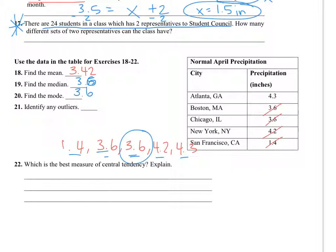And any outliers, which one is either really high or really low, I'm going to go with 1.4. So on a number line, if we were graphing these, 4.3 would be right here, 3.6. I'd put another dot for 3.6, 4.2, and the one that's far off is way over here, 1.4. So on a number line, 1.4 is far away.